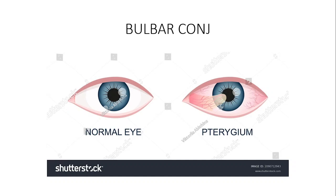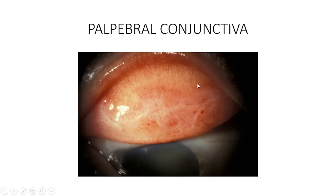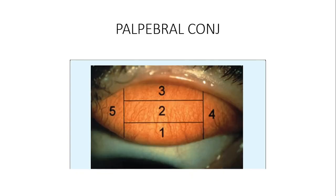The conjunctiva is a mucous membrane. There are several mucous membranes in the body, and the eye is no exception. It is the mucous membrane lining the posterior surface of the eyelid and the anterior surface of the eyeball. For example, this area here is conjunctiva — and remember, this is the cornea.